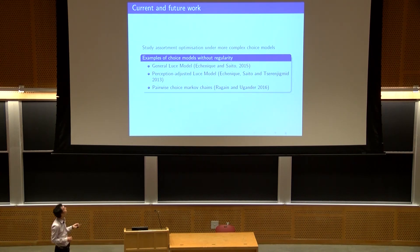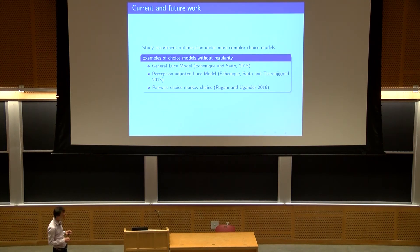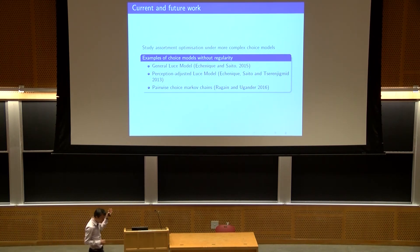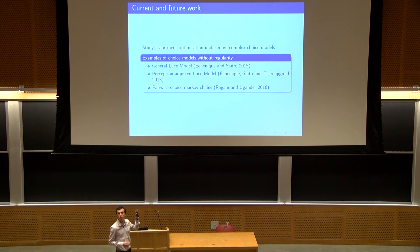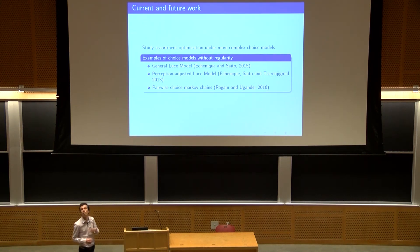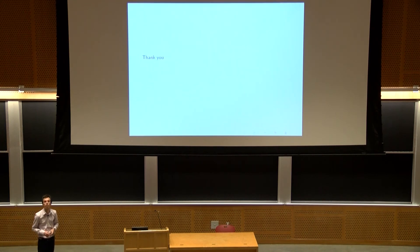In conclusion, we studied the assortment problem, and particularly the revenue order assortment strategy under a quite general discrete choice model. We showed a strong connection between two problems: one about setting prices and the other about selecting subsets — they are quite equivalent in a more general setting. For future work, one direction is finding other problems that fit this general framework of regular discrete choice models. Another is to move forward in the choice literature by understanding complex behavior through models outside the class of regularity, such as the general luce model, perception-adjusted luce model, and pairwise choice Markov chains — where the regularity axiom doesn't hold and it's not clear how to proceed. Thank you very much.